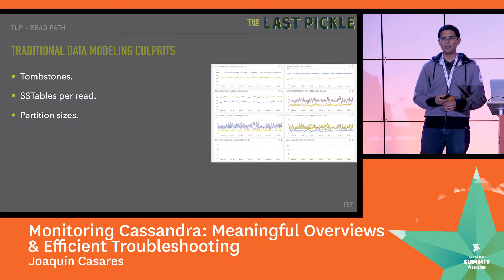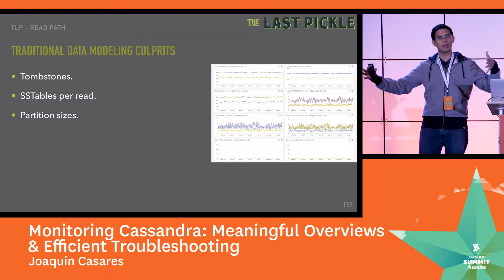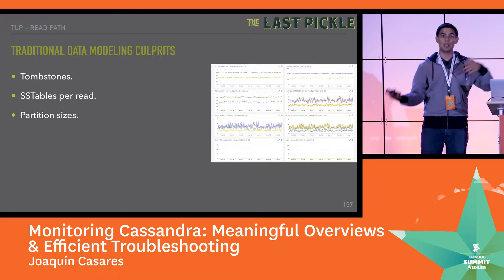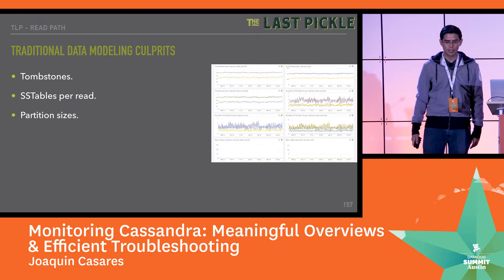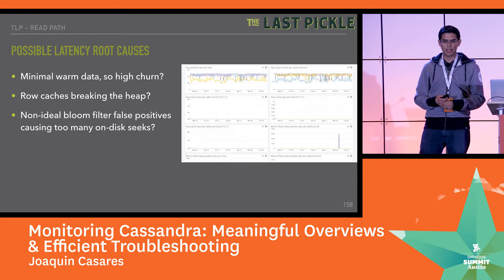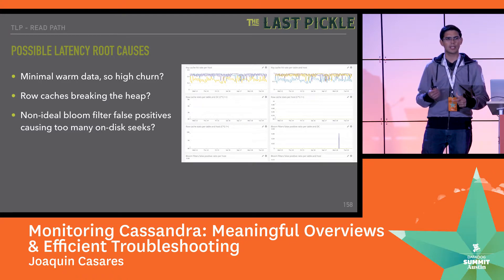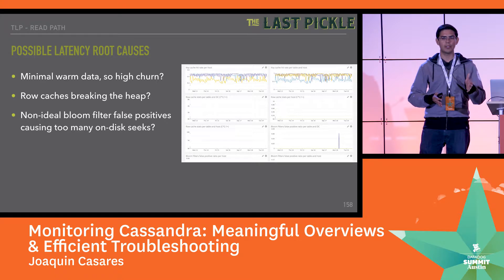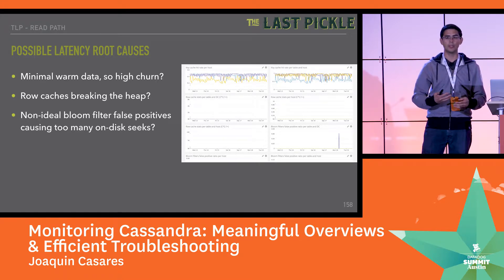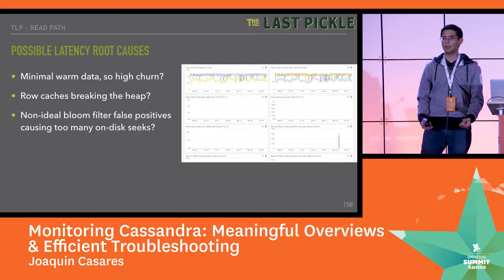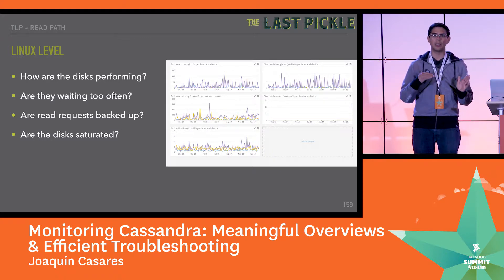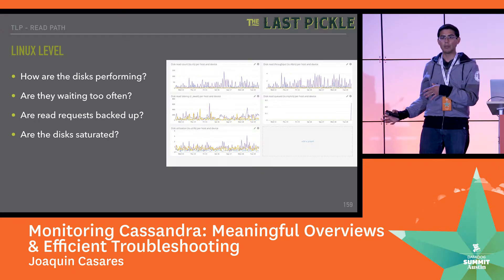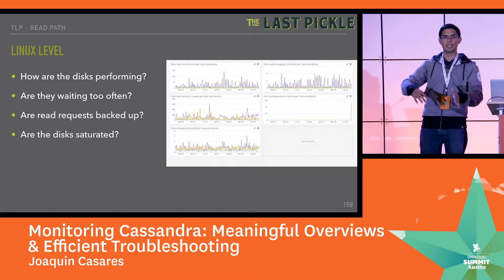Partition sizes are the same story — if you're trying to read one row that is 13 gigabytes large, it's going to take a while to load into memory, serialize, and send back over the wire. If you see a spike there, that's probably where your application issues are coming from. Then we move into caches and bloom filters. Bloom filters are a probabilistic index that tell you whether an SSTable has something, so you don't have to hit disk unnecessarily. We end with Linux-level metrics — the same ones we look at when we're on the systems.